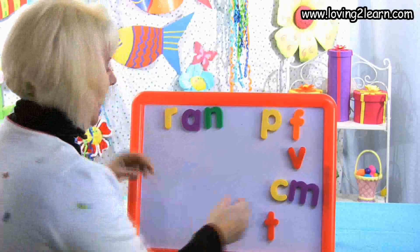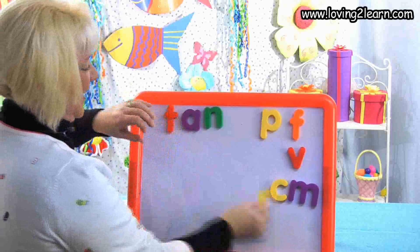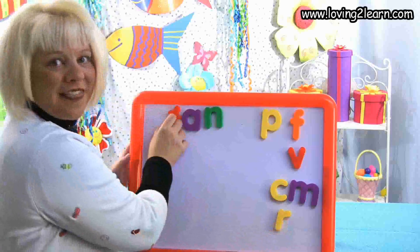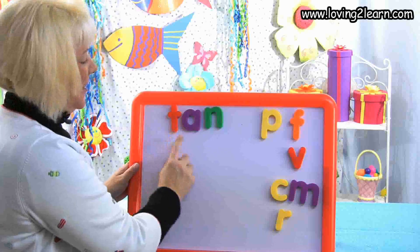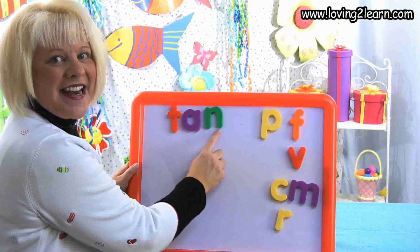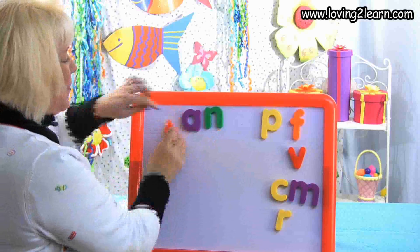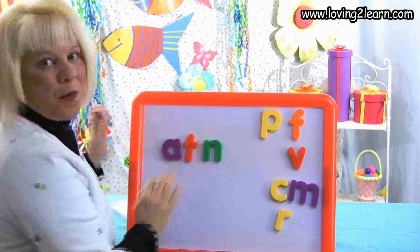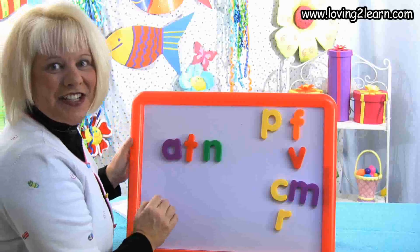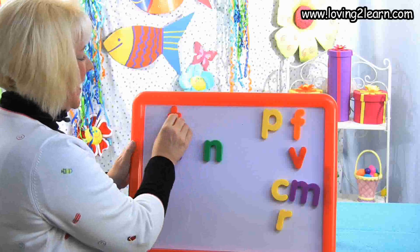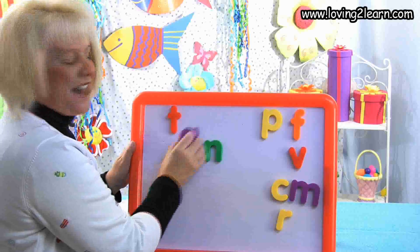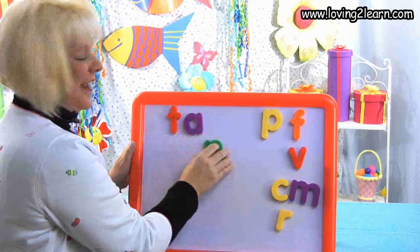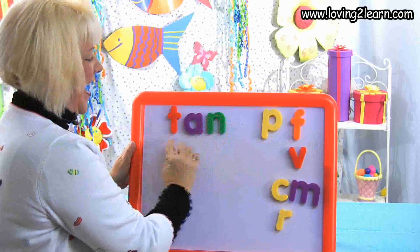I want to make the word tan. T-T-T — what letter should I get? T. I get that T, put it at the beginning of the word: T-AN. I'm going to mix that up — let's put it back together. T-T-T — that's right, T. A — there's that A — and an N. Tan.